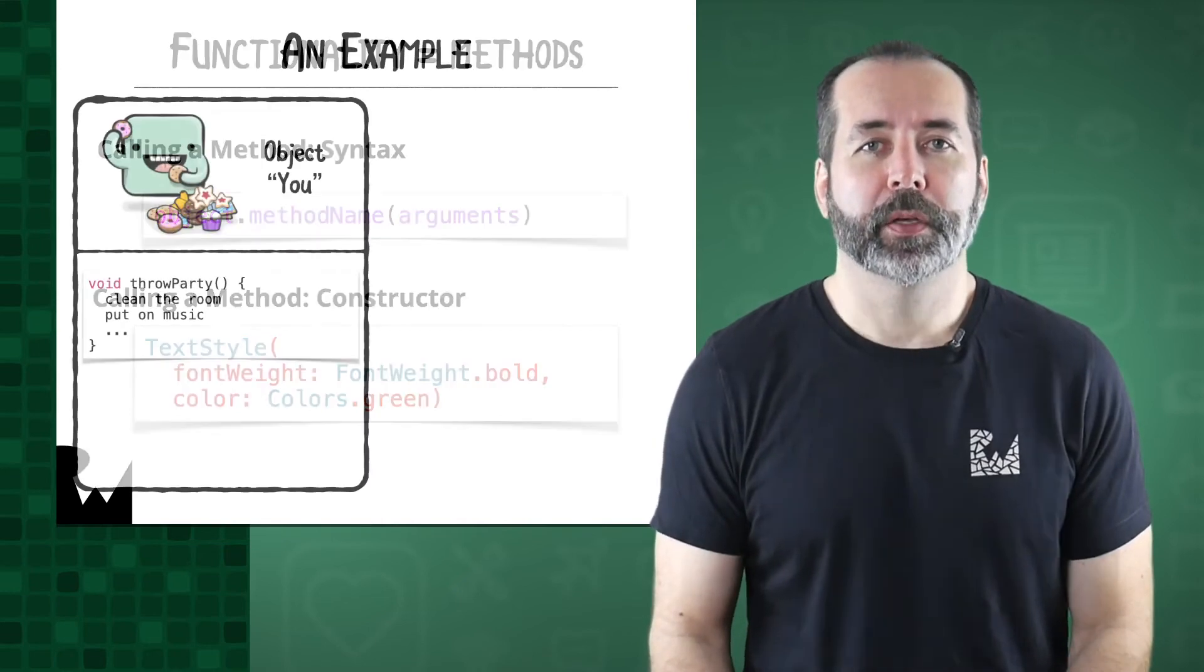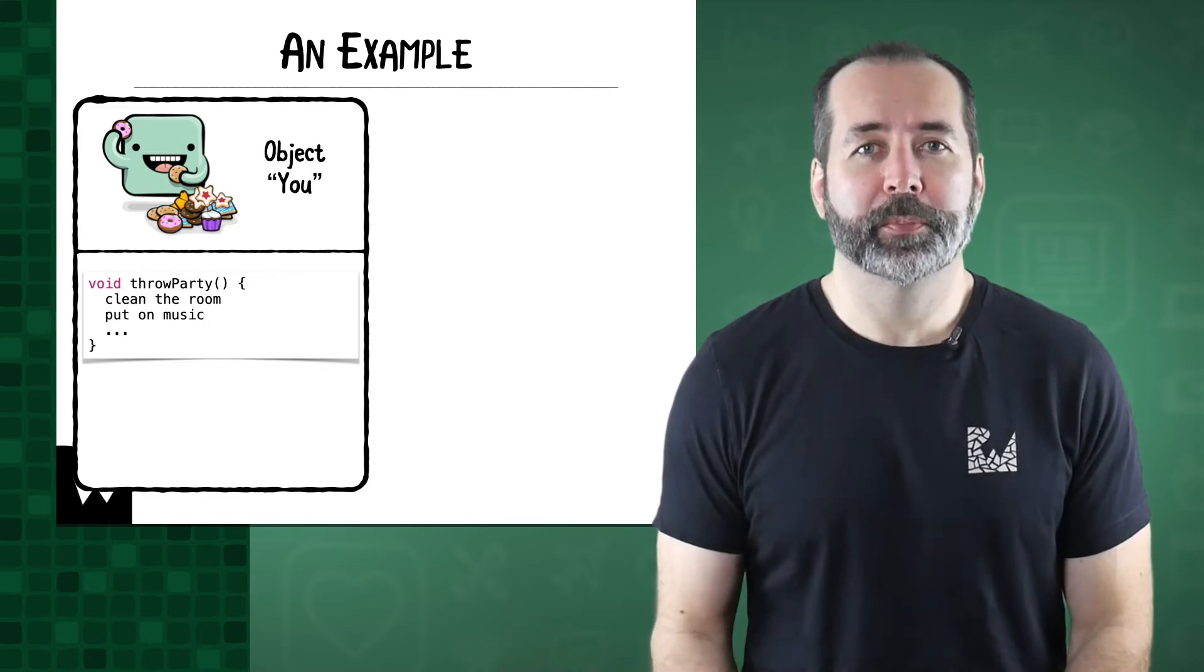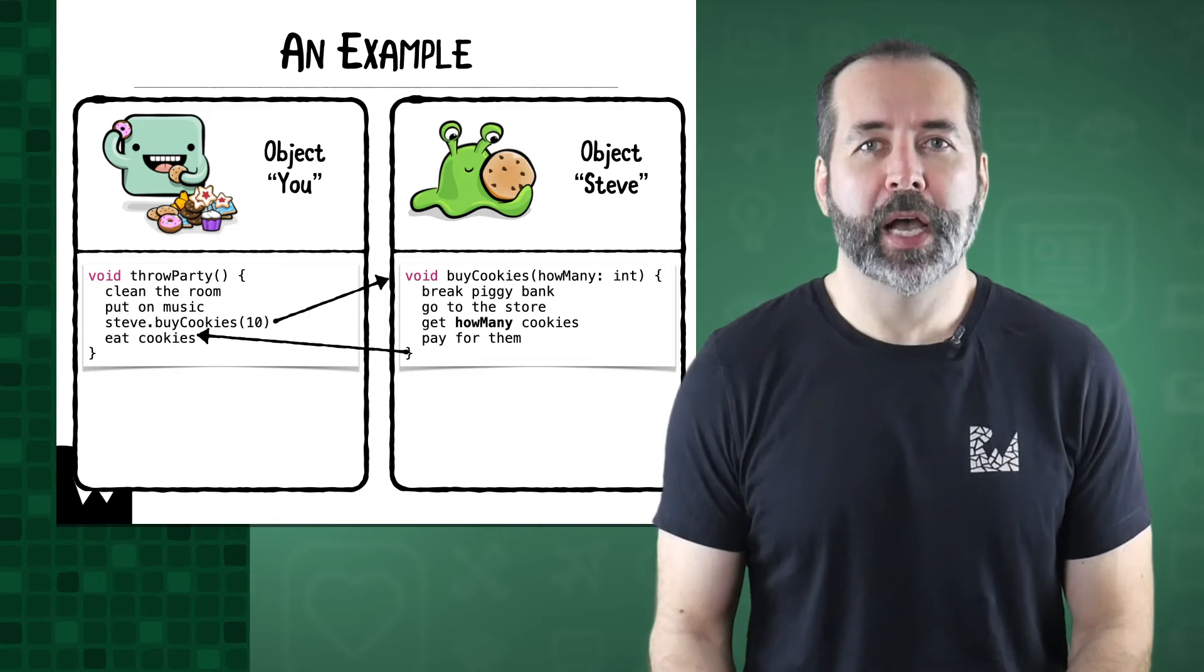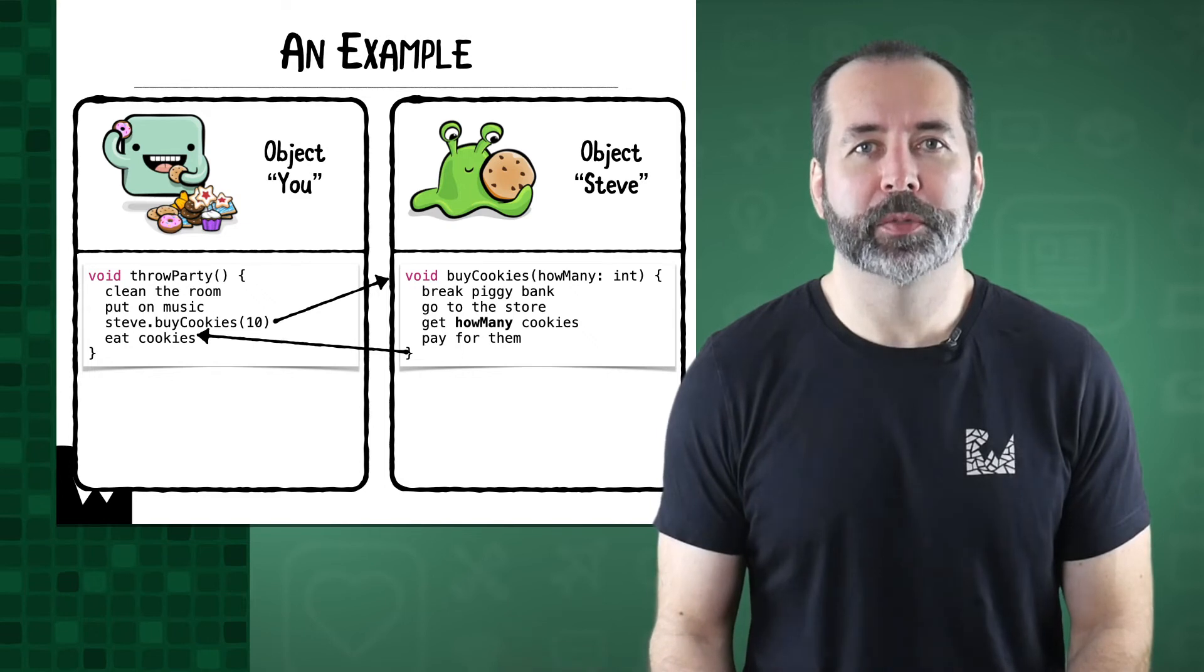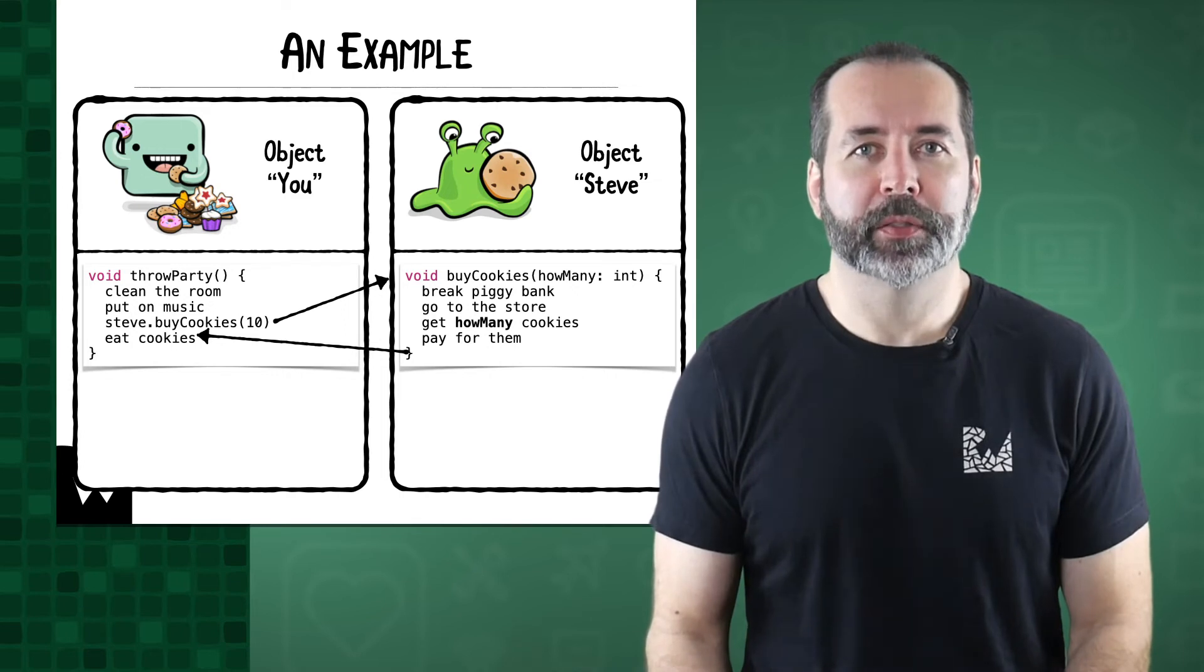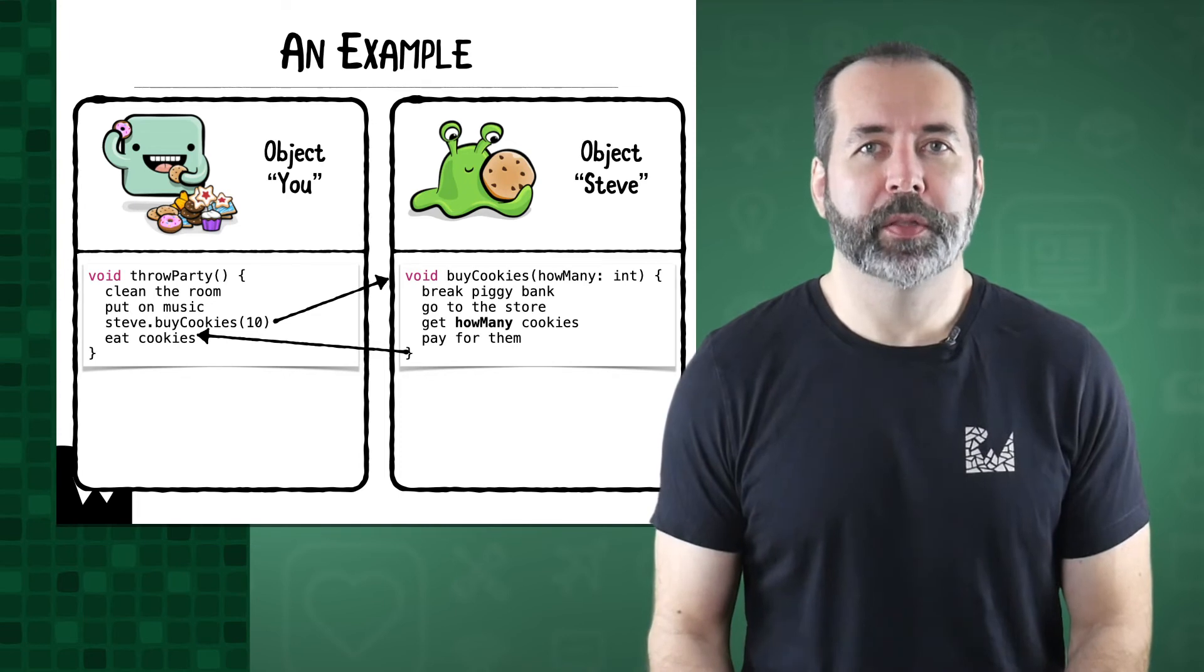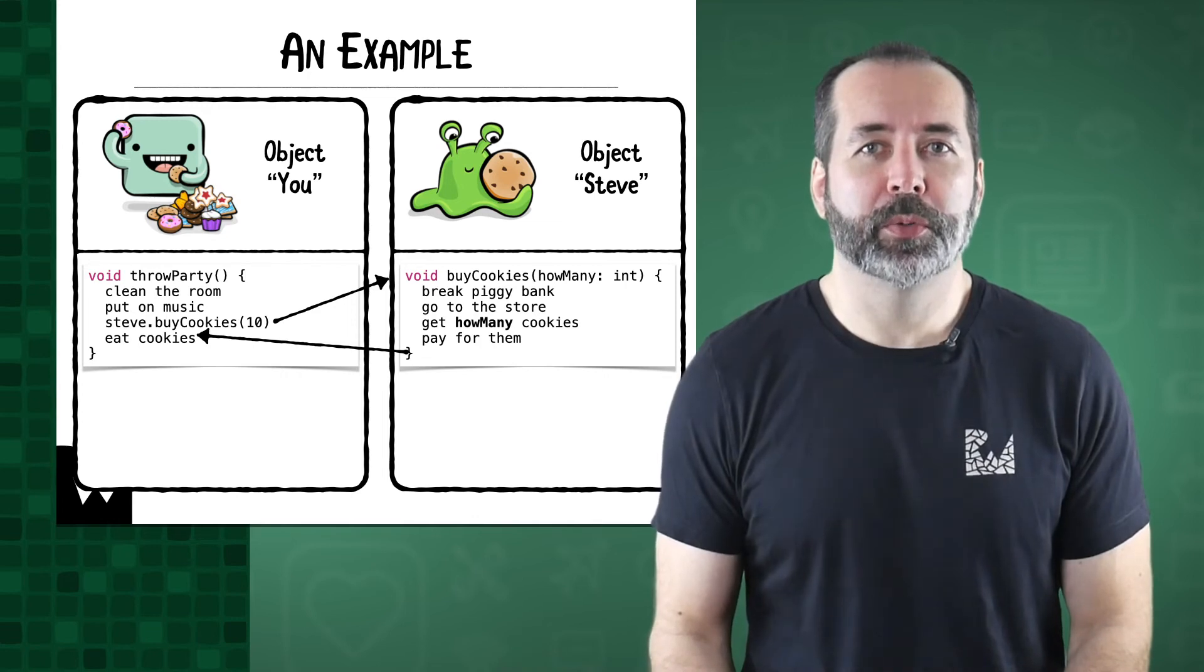The concept of methods may still feel a little bit weird to you, so let's take a look at an example. You, or at least an object named you, wants to throw a party. You clean your room and put on some music, but you forgot to buy some cookies. Fortunately, you've invited the object named Steve, who happens to live next door to a convenience store. So you call a method on Steve asking him to bring you some cookies. The computer now switches to the object Steve and executes the commands from his buy cookies method, one by one, from top to bottom. When the buy cookies method is done, the computer returns to your throw party method and continues with that, so you and your friends can eat the cookies that Steve brought back with him.